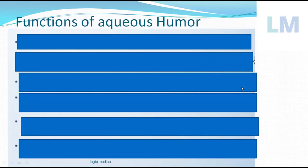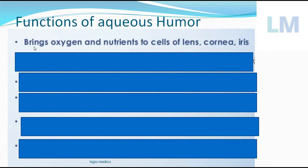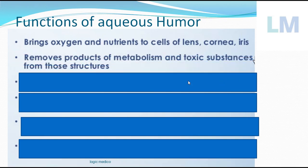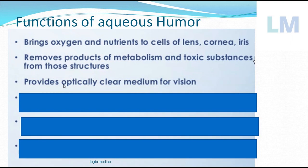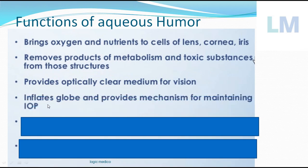The functions of aqueous humor: first, it brings oxygen and nutrients to the structures it touches — the lens, the iris, and the cornea. It also drains waste products and toxins from these structures so that the aqueous humor remains transparent and watery. It provides an optically clear medium for vision — otherwise, in conditions like hypopyon, blood clot or pus in the aqueous humor will affect vision. It also inflates the globe and maintains intraocular pressure.